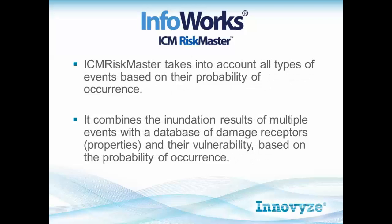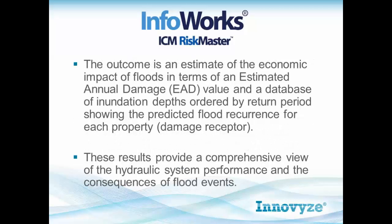Infoworks ICM Risk Master takes into account all types of events based on their probability of occurrence. It combines inundation results of multiple events with a database of damage receptors or properties and their vulnerability, based on the probability of occurrence. The outcome is an estimate of the economic impact of floods in terms of an estimated annual damage value, and also a database of inundation depths ordered by return period showing the predicted occurrence for each property or damage receptor. These results provide a comprehensive view of the hydraulic system and its performance and the consequence of flood events.